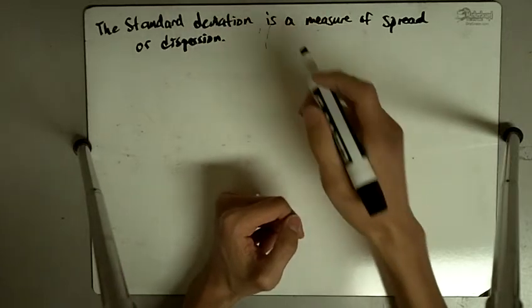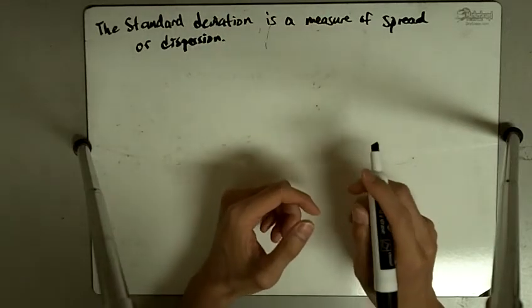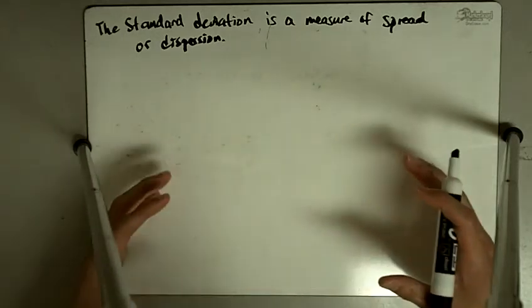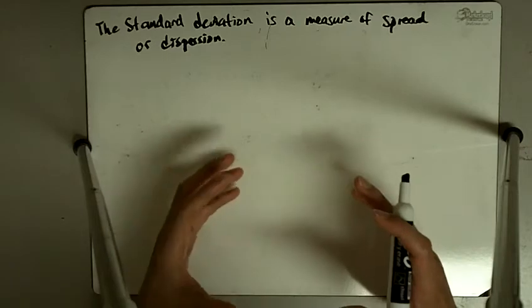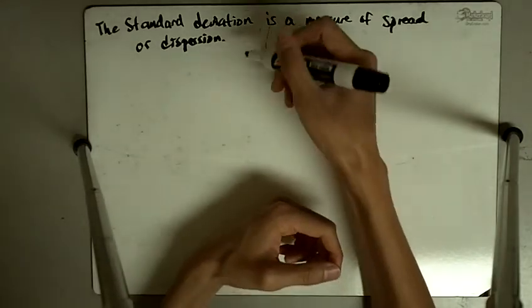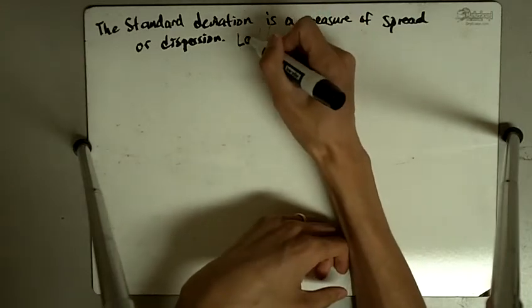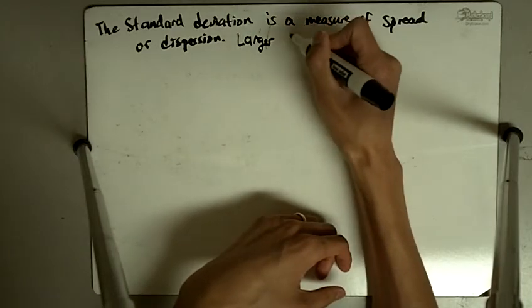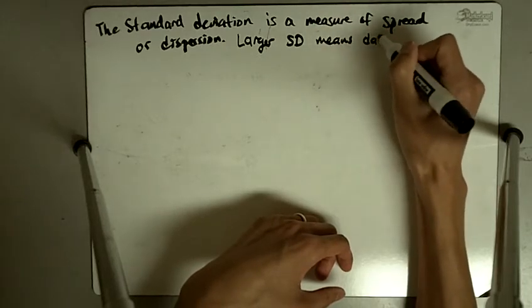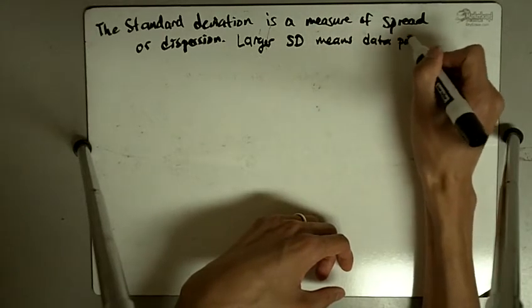In other words, if you have a large standard deviation, it means the data points in your sample are spread out. And if you have a small standard deviation, it means the data points in your sample are close together or are not as spread out. So larger SD means data points are spread out and vice versa.